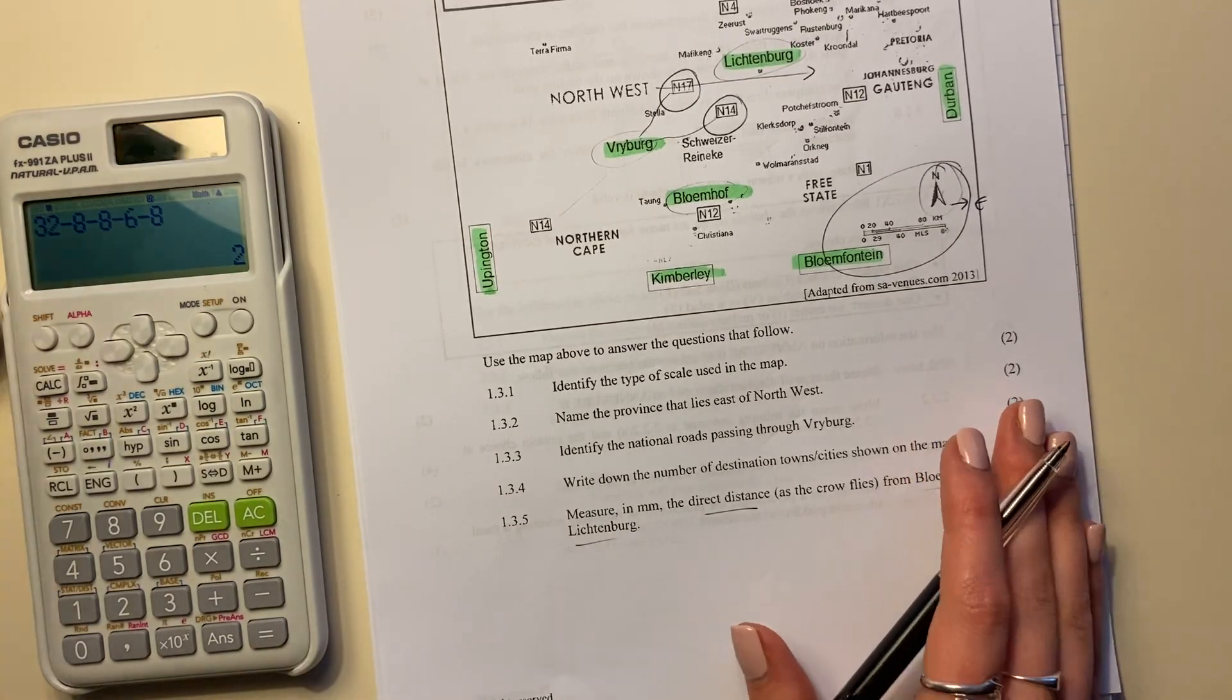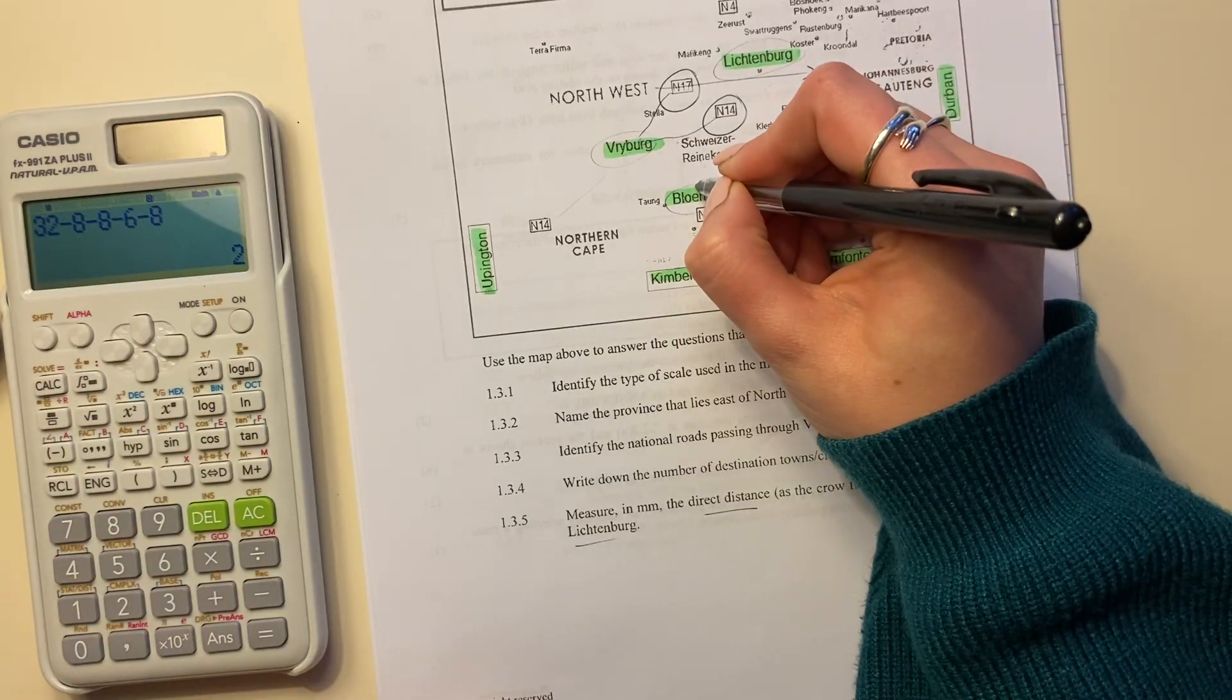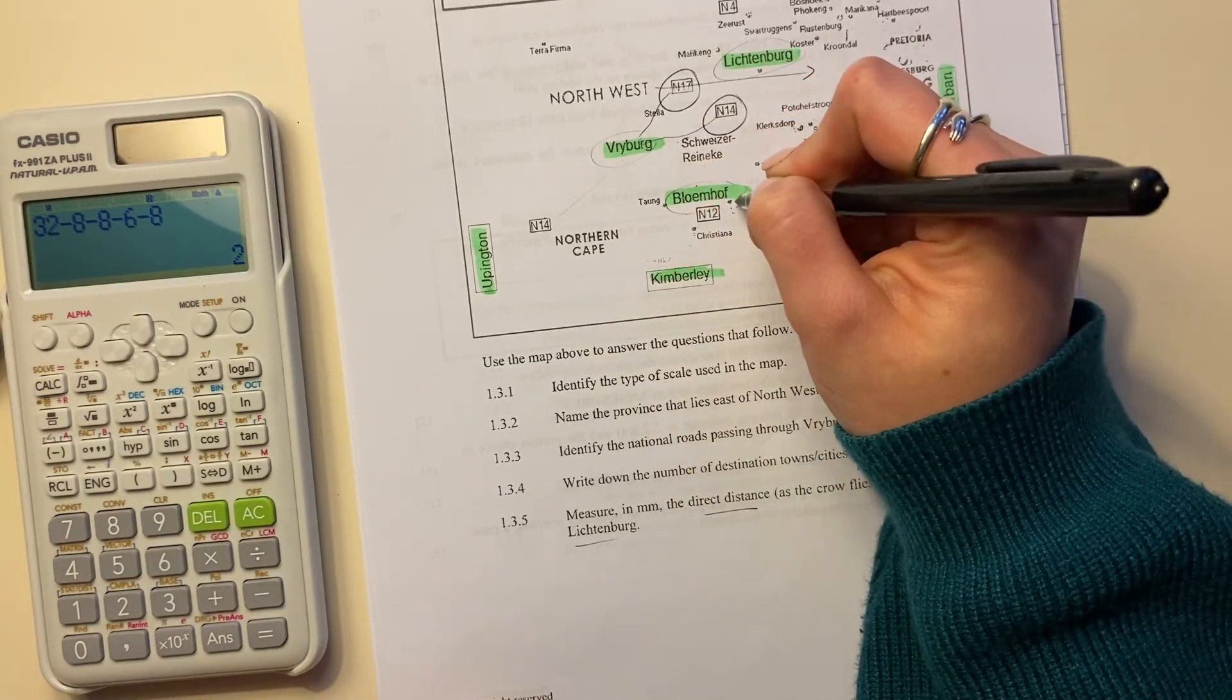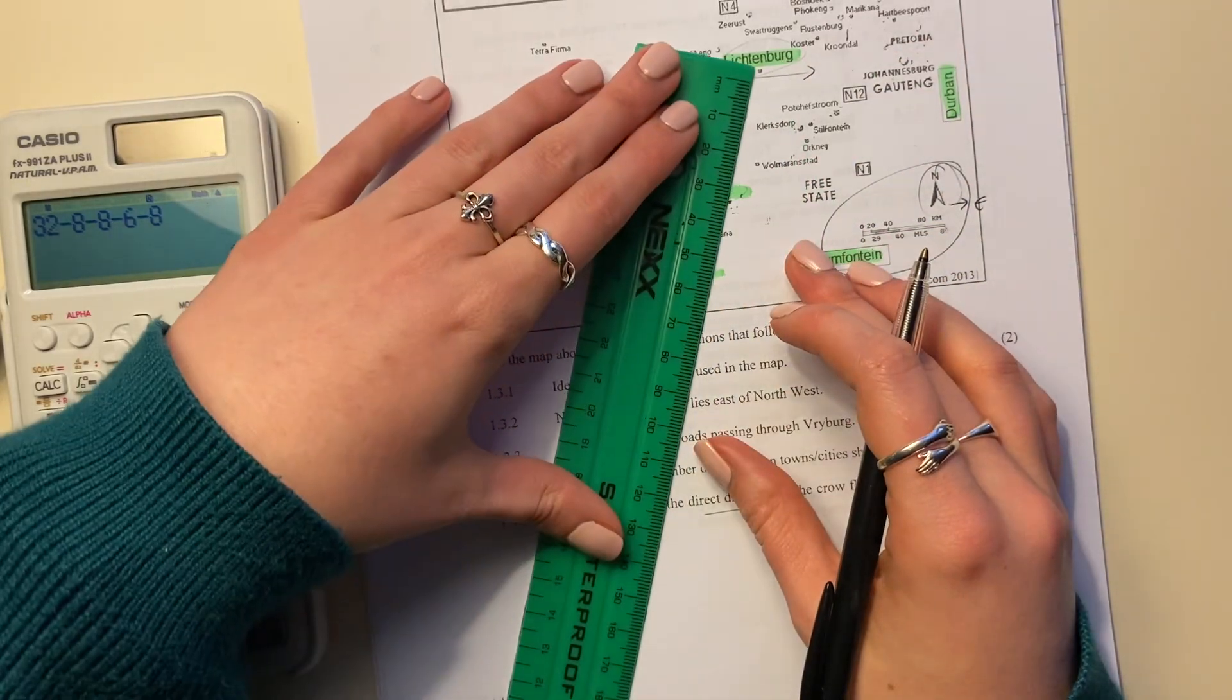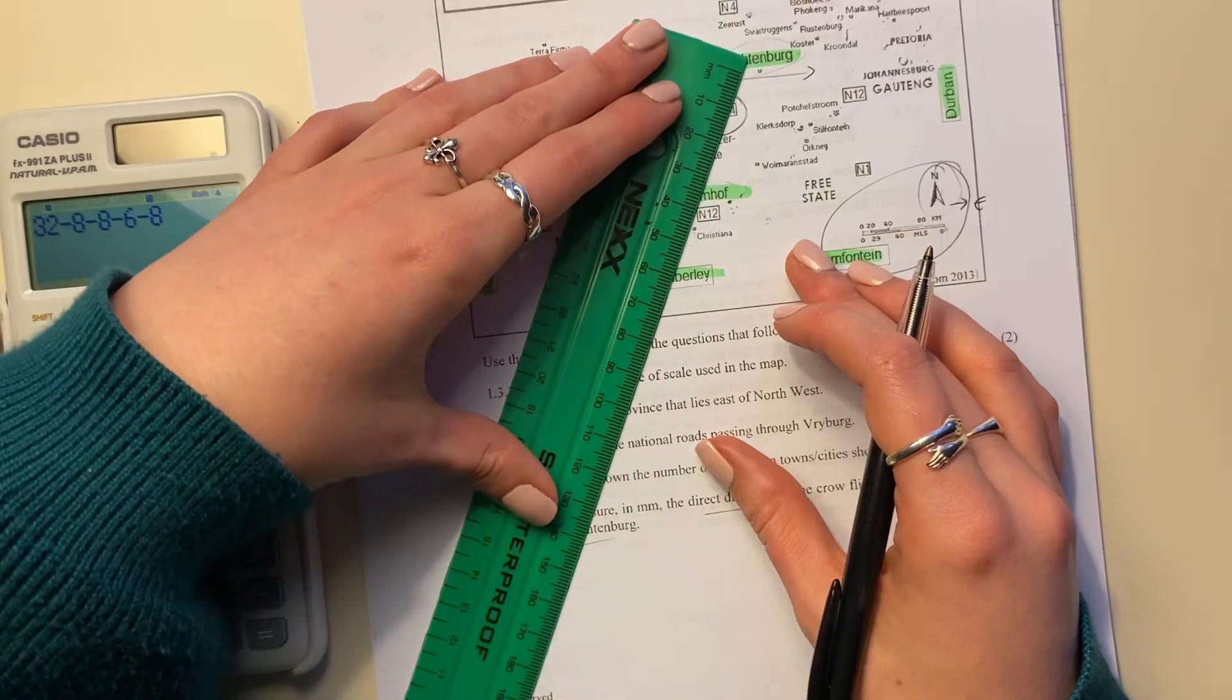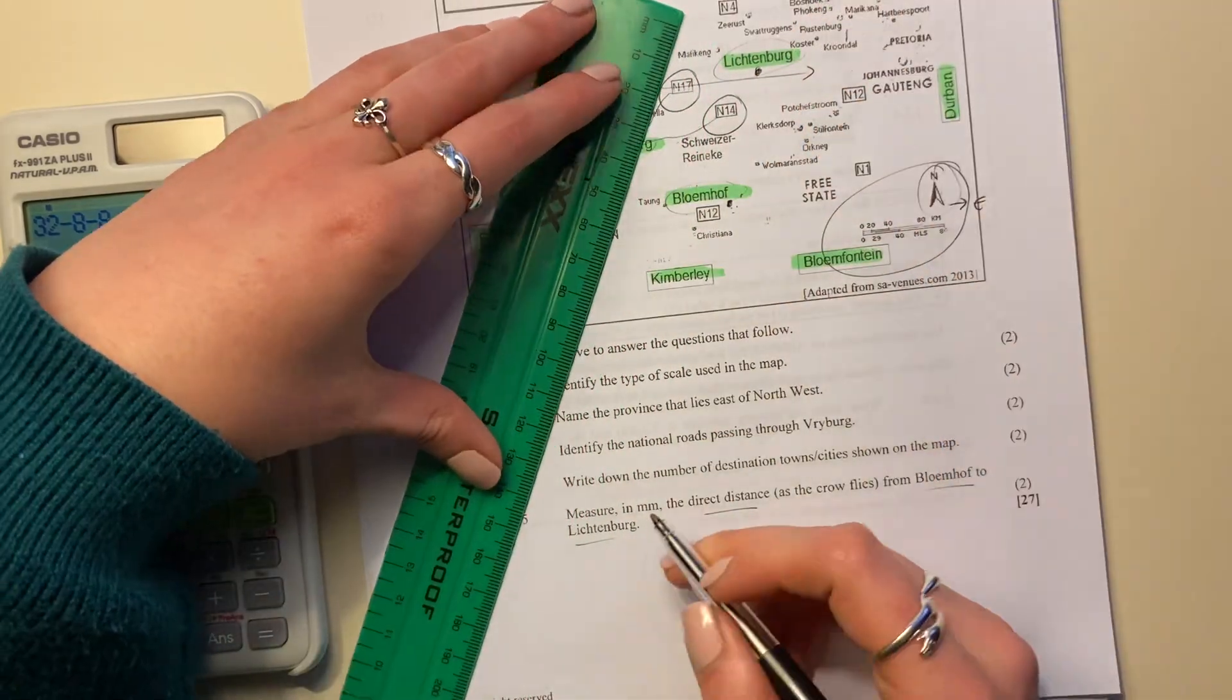Okay, so where are we going from? It says from Blomhoff. So Blomhoff is over here. I think the little dot for Blomhoff is actually over there. And we're going to measure. So there's the dot. Sorry. There's the dot and there's the dot for Lichtenberg. So those are the two.